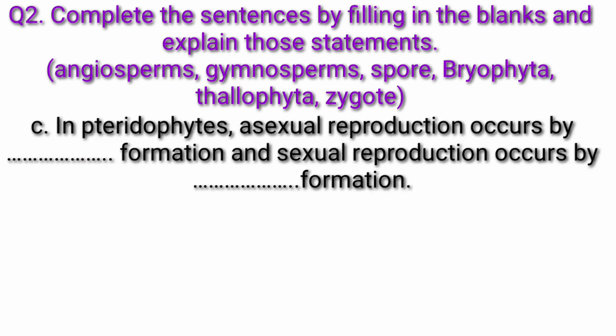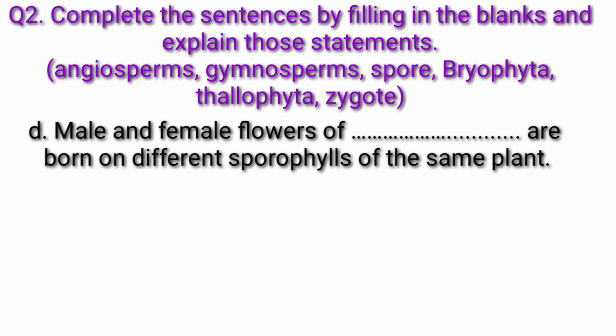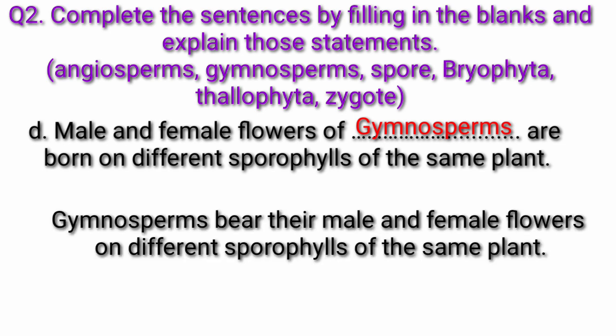Question C: In pteridophytes, asexual reproduction occurs by fill in the blank formation and sexual reproduction occurs by fill in the blank formation. Answer: In pteridophytes, asexual reproduction occurs by spore formation and sexual reproduction occurs by zygote formation. Pteridophyta plants show alternation of generations — one generation reproduces by spore formation and the next reproduces sexually by zygote formation. Question D: Male and female flowers of fill in the blank are born on different sporophylls of the same plant. Answer: Male and female flowers of gymnosperms are born on different sporophylls of the same plant.